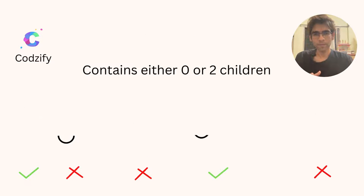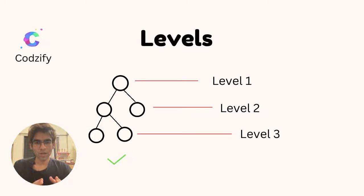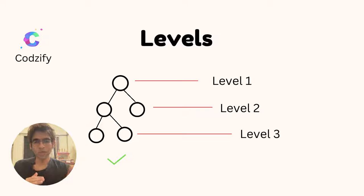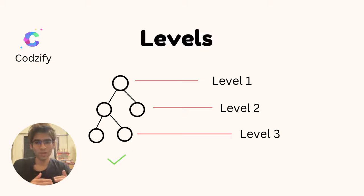Every tree we create is identified by its levels. The first level contains one node, level two contains two nodes, and level three contains two nodes. This is how you can identify the levels of any tree.